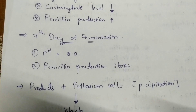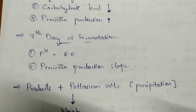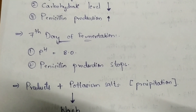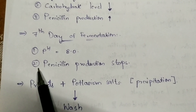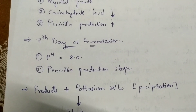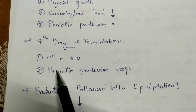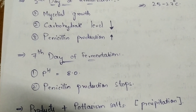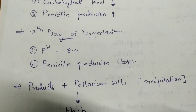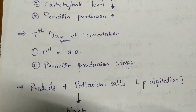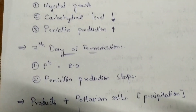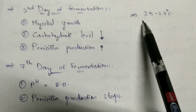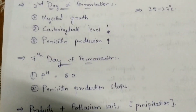At the last stage of fermentation, the pH increases up to 8.0, reaching a neutral point. Then penicillin production gets stopped. The optimum temperature used in the fermentation process is 25 to 27 degrees Celsius — this is very important to remember.